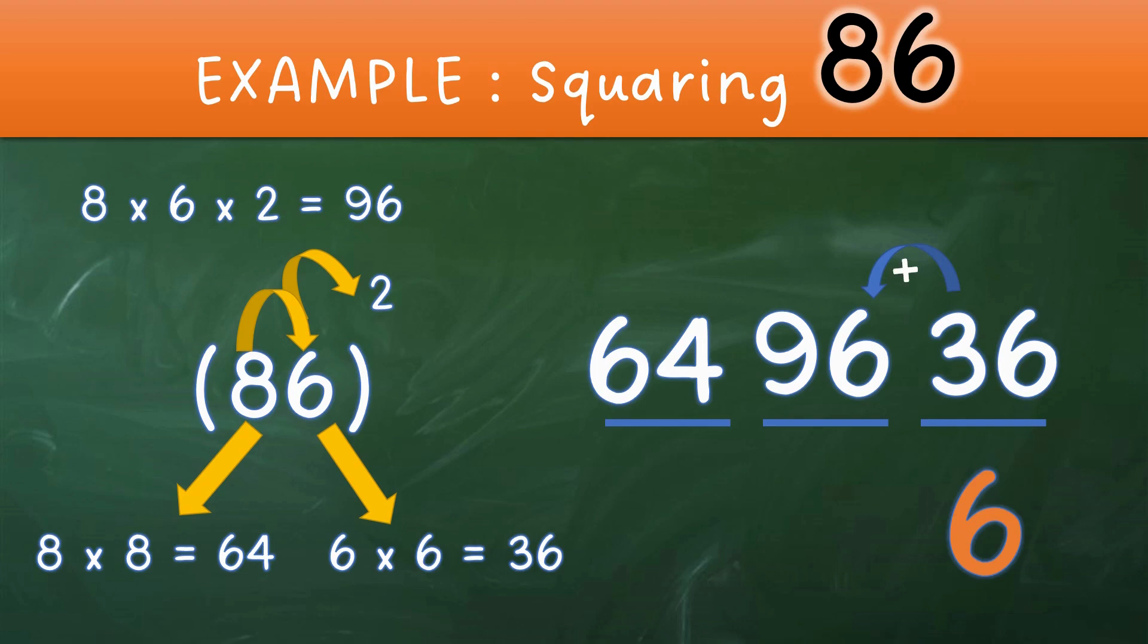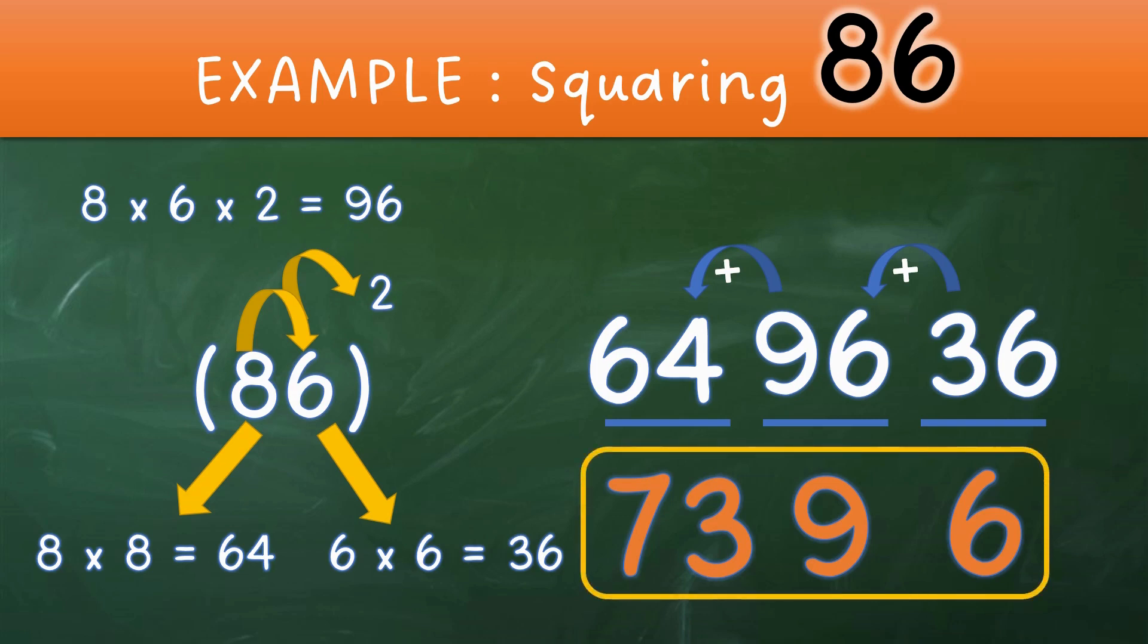The middle number is 6, so 6 plus 3 gives you 9. Then we will take the 9 out of the middle number and add it to the left number, and that will give us 64 plus 9 equaling 73. So the final answer will be 7396. You just need to practice it and you will be able to do it faster than your last time.